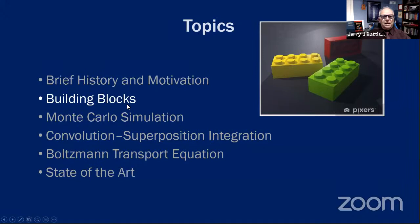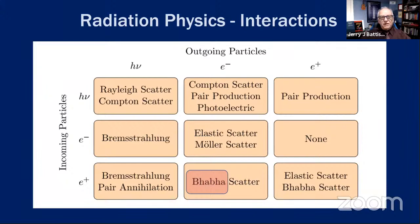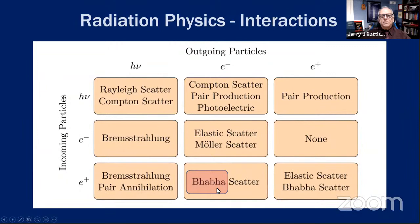Let's look at the building blocks. All of these interaction cross sections are important, but if you had to forget most of them, don't forget Compton scattering — that's the most prevalent interaction for radiotherapy physics. I also note that Bhabha scattering comes in when it comes to electrons and positrons, and Bhabha was a very famous physicist in India.